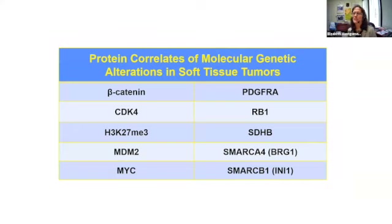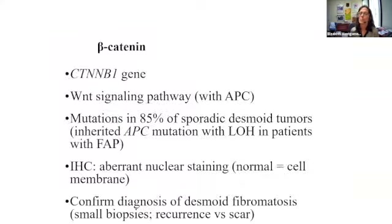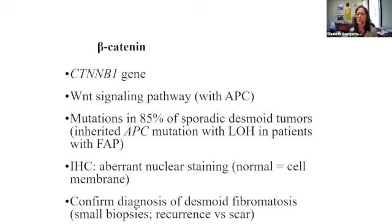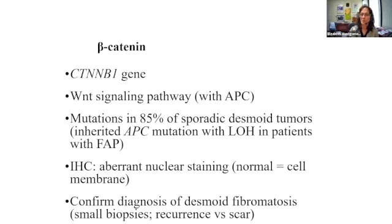There are immunostains available for many molecular markers, which is very convenient — and it's really neat that we can pick these up immunohistochemically, even if they're not perfect. Beta-catenin is the protein product of the CTNNB1 gene and a big component of the Wnt signaling pathway. Sporadic desmoid tumors have mutations in this gene in about 85%, and some patients with FAP have alterations of the APC gene — but regardless of which alteration, you see abnormal beta-catenin, which we can exploit on immunohistochemistry.